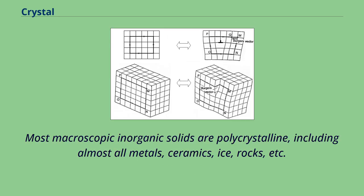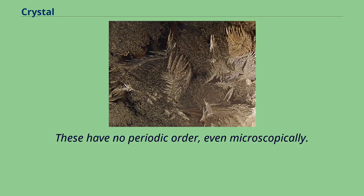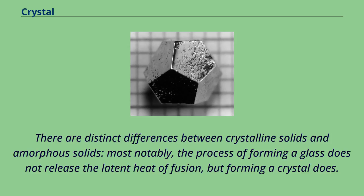Most macroscopic and organic solids are polycrystalline, including almost all metals, ceramics, ice, rocks, etc. Solids that are neither crystalline nor polycrystalline, such as glass, are called amorphous solids, also called glassy, vitreous, or non-crystalline. These have no periodic order, even microscopically. There are distinct differences between crystalline solids and amorphous solids — most notably, the process of forming a glass does not release the latent heat of fusion, but forming a crystal does.